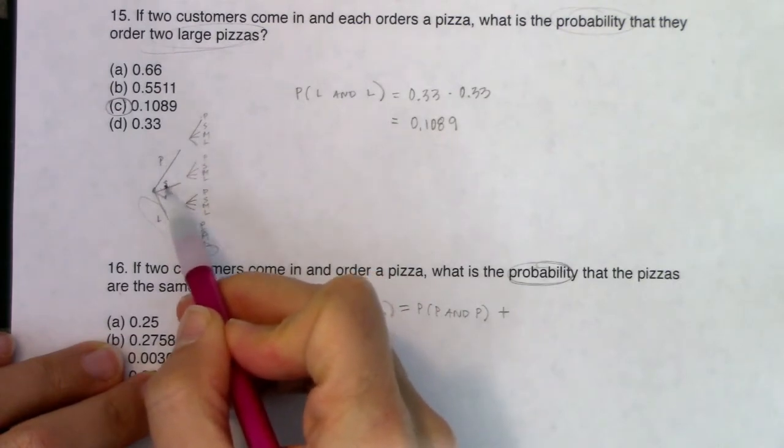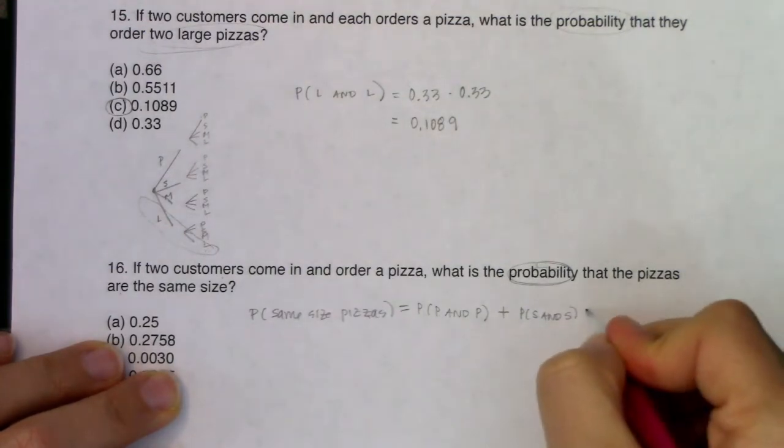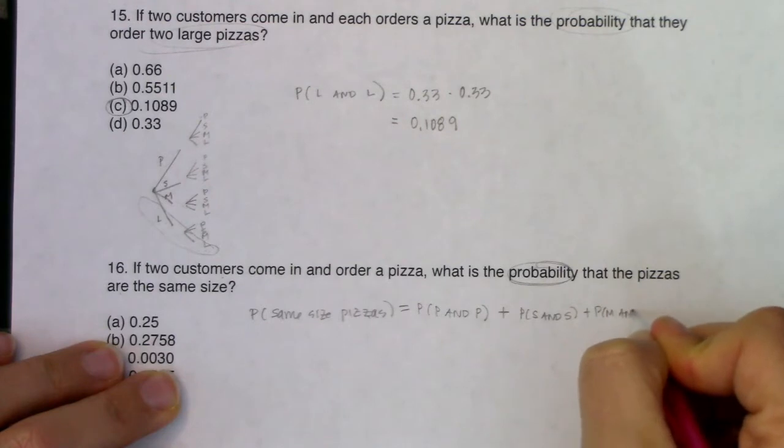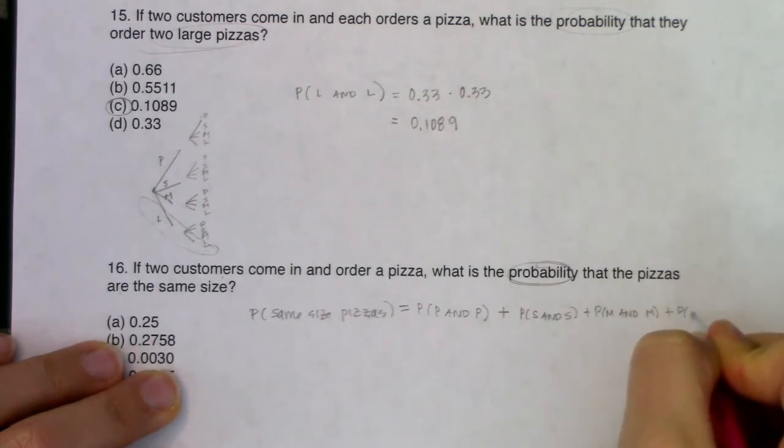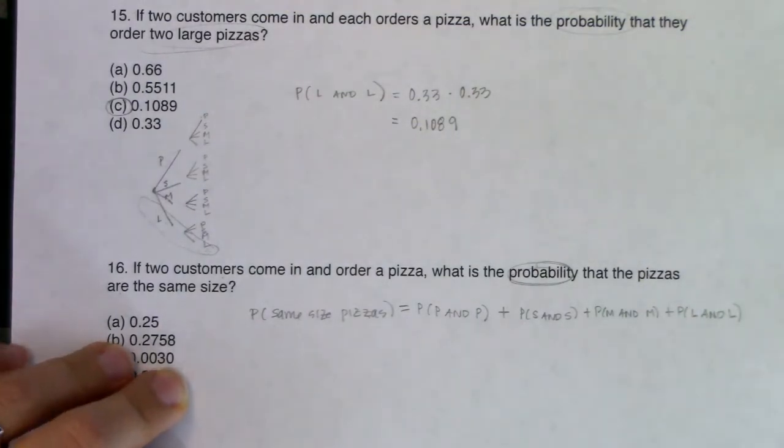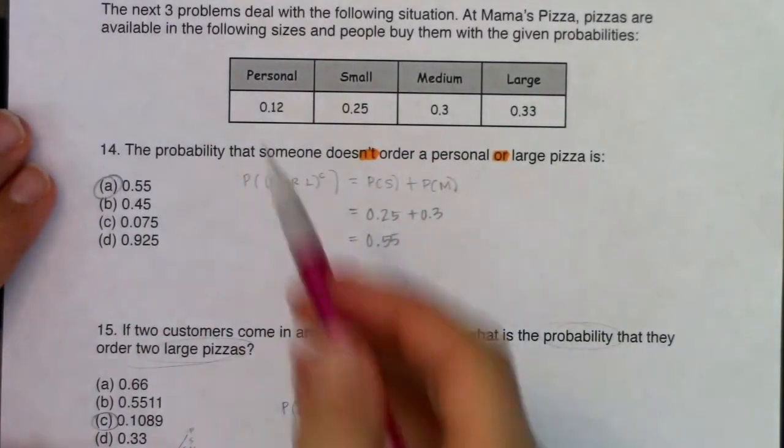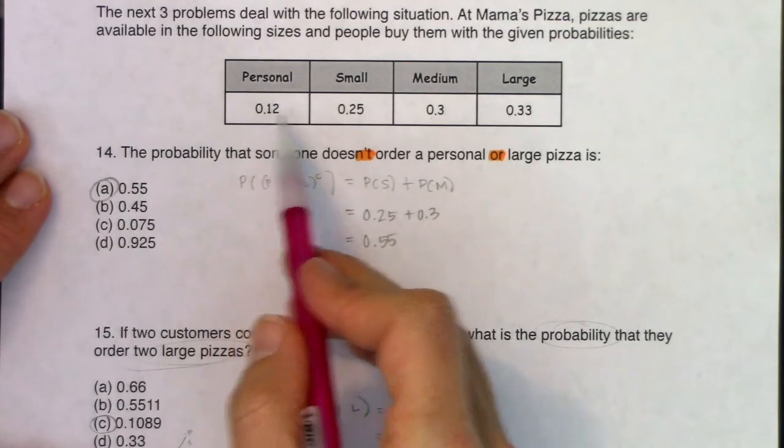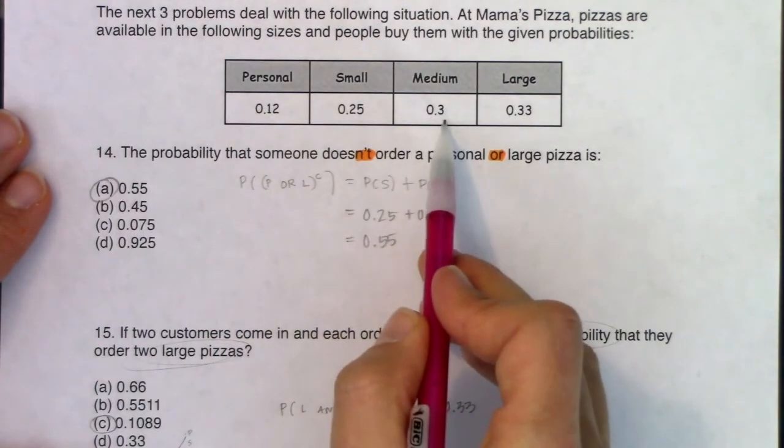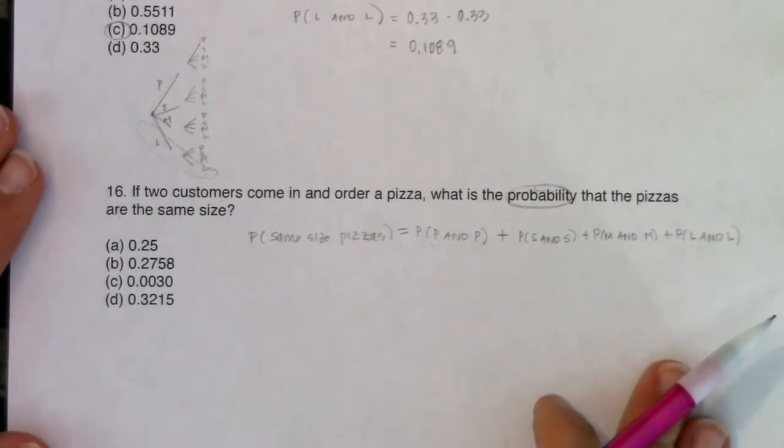You can start to see the next one's going to be medium and medium, and then last but not least, the one we just calculated in number 15: large and large. Let me refer back to my table and use those numbers to calculate these probabilities. We've got personal and personal: 0.12 times 0.12, then 0.25 times 0.25, then 0.3 times 0.3, and again 0.33 times 0.33. Let me go fill that in and we will get all of that information into our calculators.